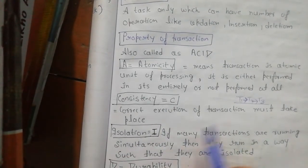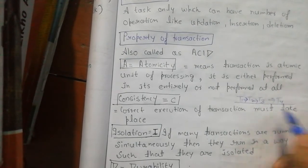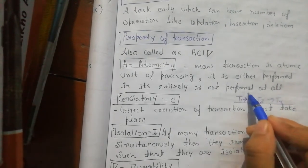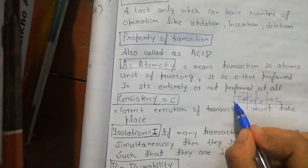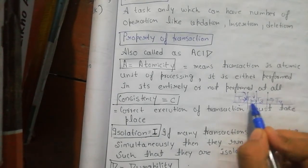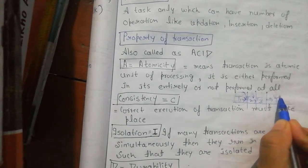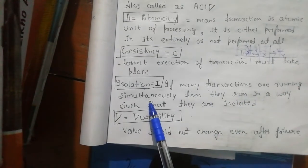What is Isolation? If many transactions are running at the same time, they will be isolated, meaning there is some isolation between them. When this transaction executes, then after that this will execute. If many transactions are running simultaneously, they will run in a way such that they are isolated.